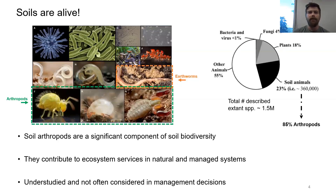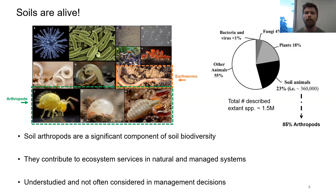Soils are alive. They are home to every kingdom of life on the planet, ranging from viruses, bacteria, fungi, all the way up to some of the larger mammals like voles and moles. Soil arthropods are a really large component of soil biodiversity. There are about 1.5 million species that have been described, and of those, 23% spend all or some of their life in the soil. And of that 23%, 85% are arthropods. They're this really large, diverse group, and they're very important in contributing to ecosystem services in natural and managed systems.